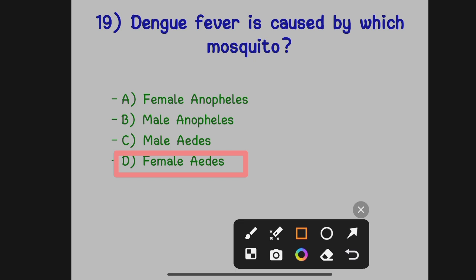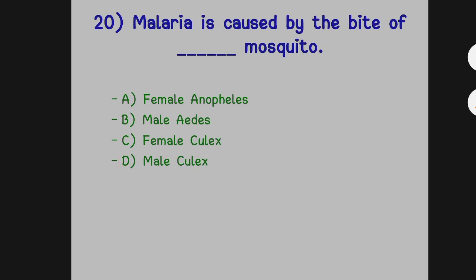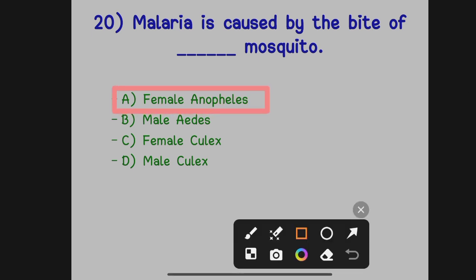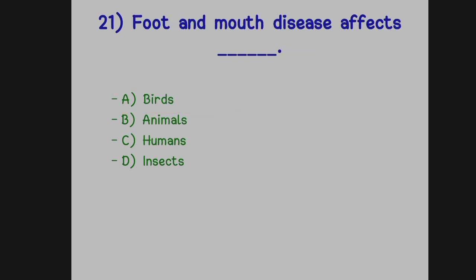Malaria is caused by the bite of a dash mosquito. Option A: Female Anopheles. Option B: Male Aedes. Option C: Female Culex. Option D: Male Culex. The correct answer is Option A, female Anopheles — this mosquito causes malaria.